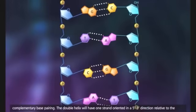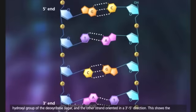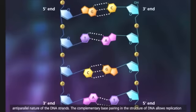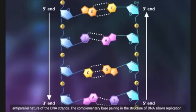The double helix will have one strand oriented in a 5' to 3' direction relative to the hydroxyl group of the deoxyribose sugar, and the other strand oriented in a 3' to 5' direction. This shows the anti-parallel nature of the DNA strands.